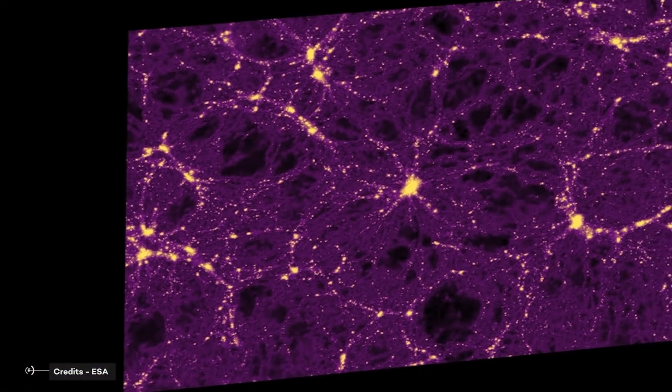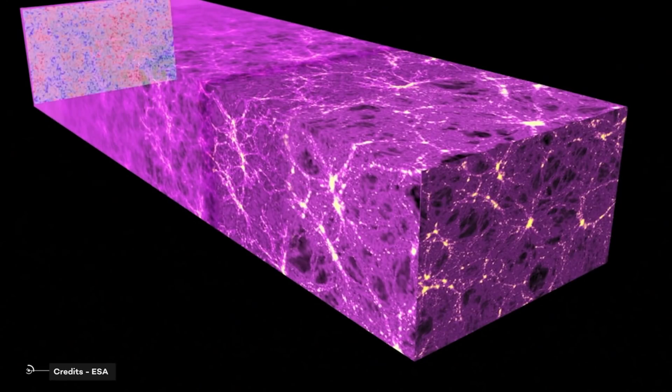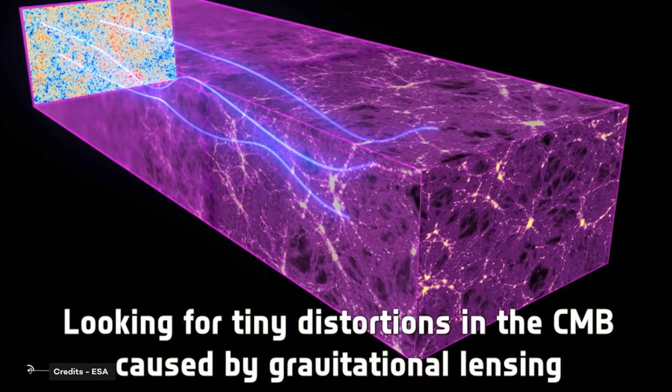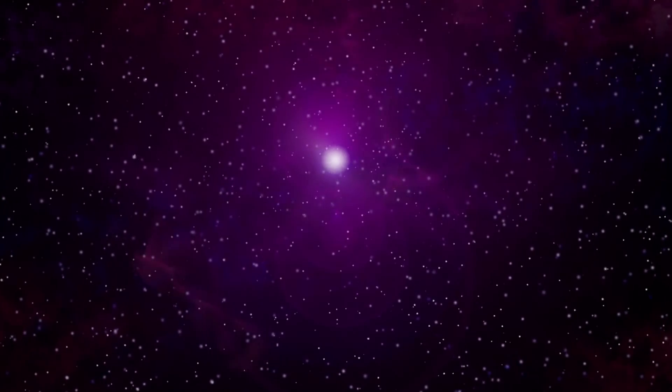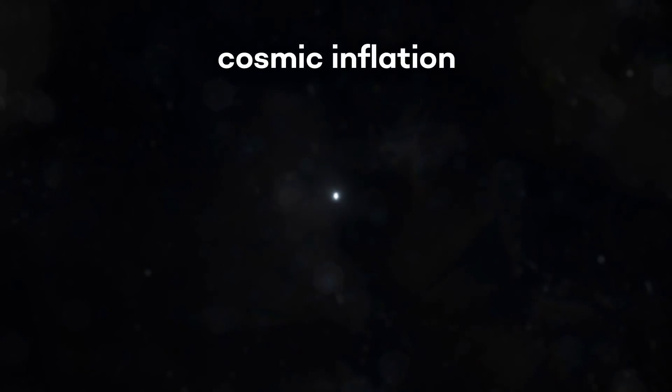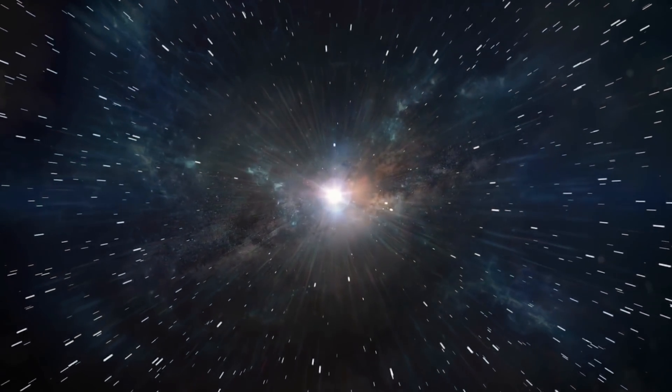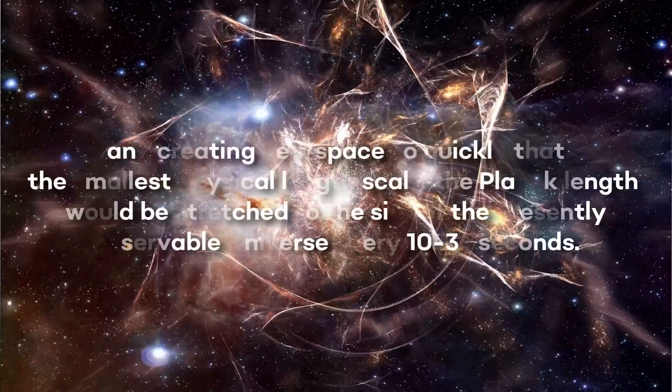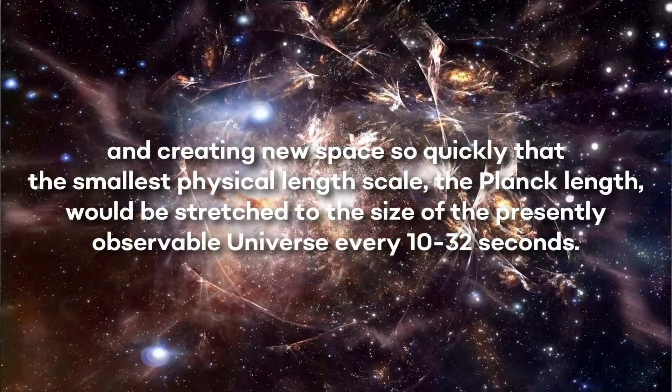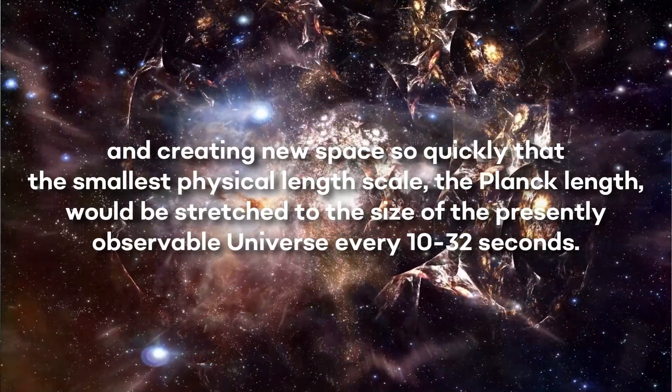Beyond our observable universe is the unobservable universe, which should look exactly like the part we can see. We know this through observations of the cosmic microwave background and the large-scale structure of the universe. The hot Big Bang may usher in the observable universe as we know it, but it does not mark the birth of space and time themselves. Before the Big Bang, the universe went through a period of cosmic inflation. Instead of being filled with matter and radiation and instead of being hot, the universe was filled with energy inherent to space itself, expanding at a constant exponential rate and creating new space so quickly that the smallest physical length scale, the Planck length, would be stretched to the size of the presently observable universe every 10 to the -32 seconds.